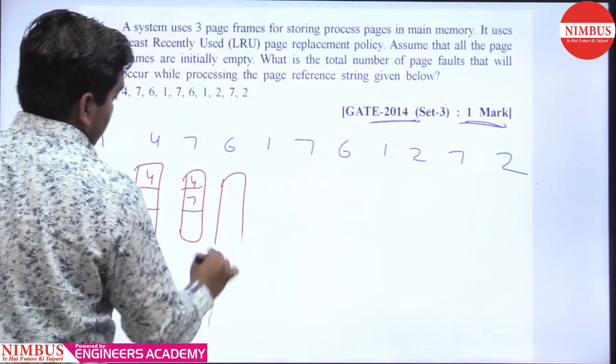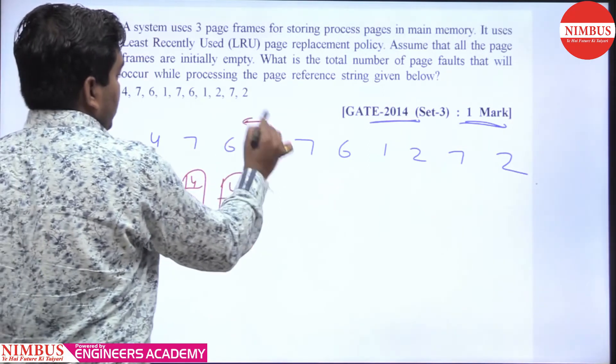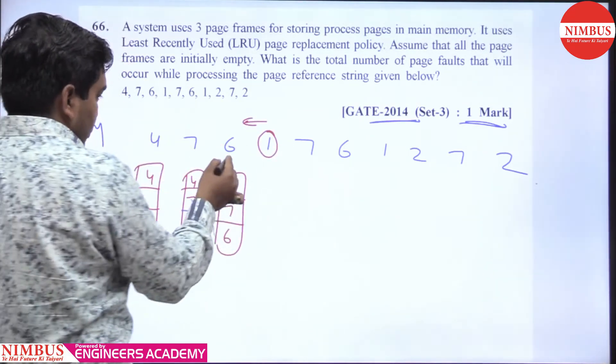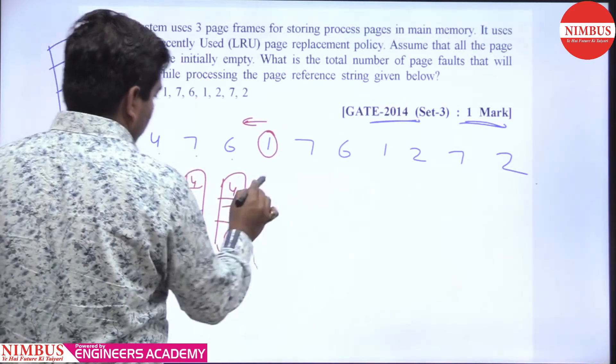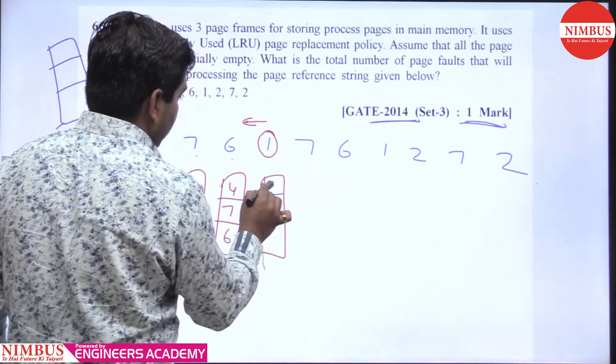4, 7, 6 - when page fault occurs at 1, we see in reverse direction which one is least recently used: 6, 4, 7. So 4 is least recently used. Then we replace 4 by 1.